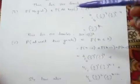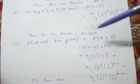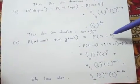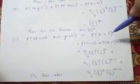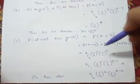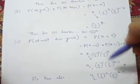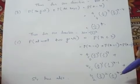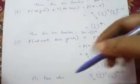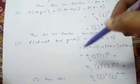Similarly, the probability of at most two girls. At most two means we have to take x less than or equal to two, which means 0 plus 1 plus 2. By using the binomial distribution formula, we can calculate this value. Here also we have to multiply with 800, capital N. So we get the answer.